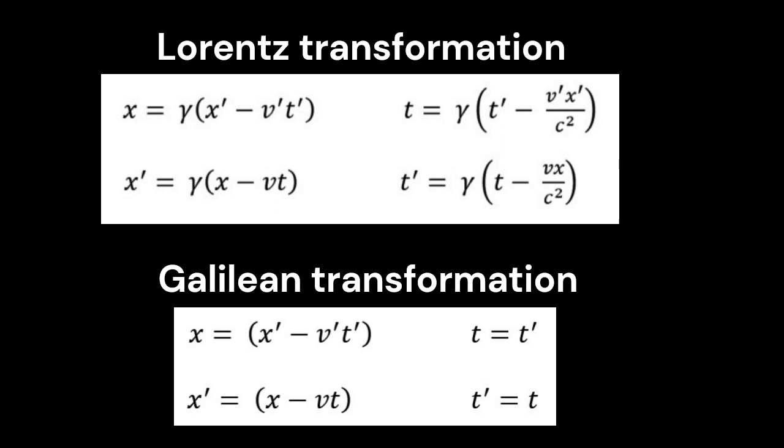Galilean transformations times the same everywhere, so t equals t prime, t prime equals t, but in the Lorentz transformations, obviously, times aren't the same. There's a gamma out front, but there's also the minus v x over c squared, and that's the time skewing term.